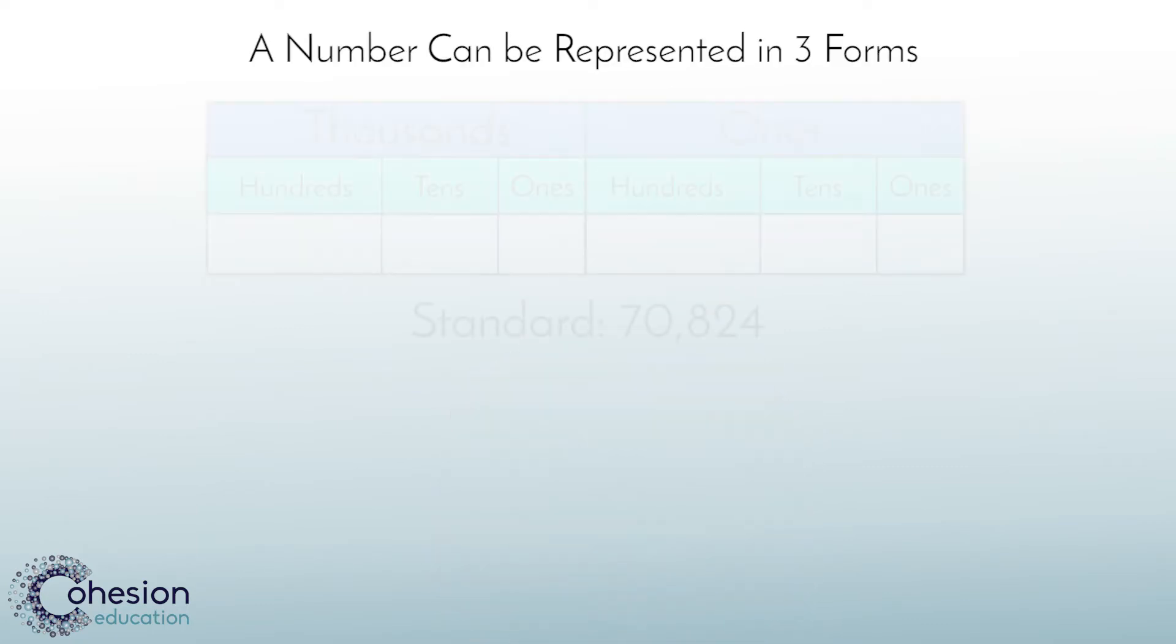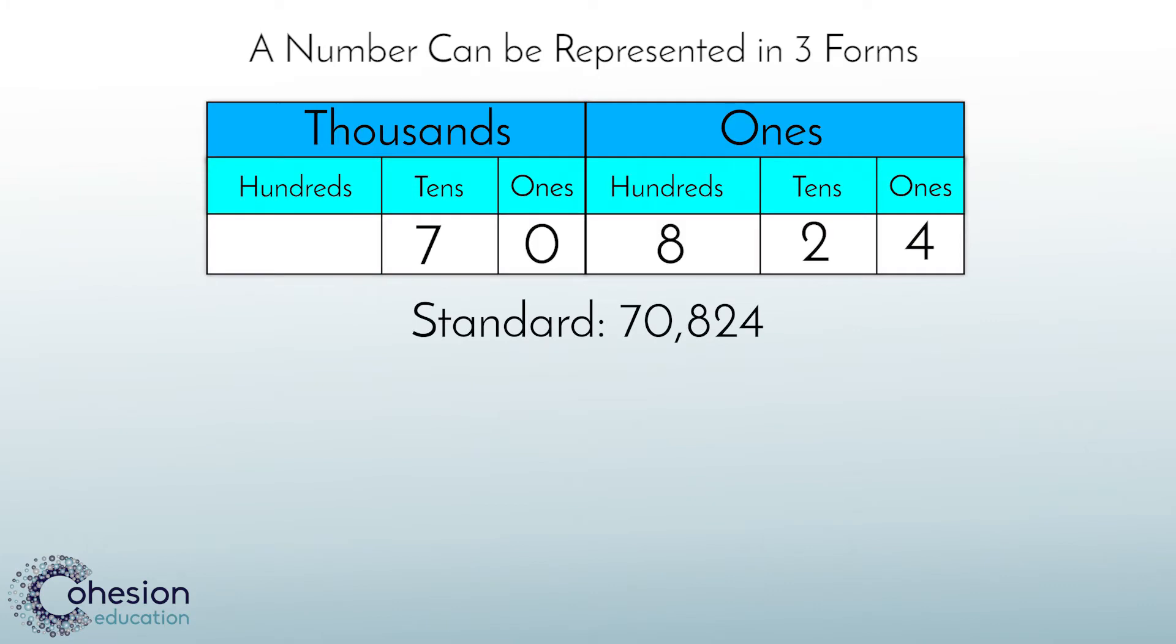For this lesson, students will generally be given one of three forms in which to write the number, and asked to write the other two on their own. For example, 70,824. This number is written in standard form, as it is a standard way to express a number.